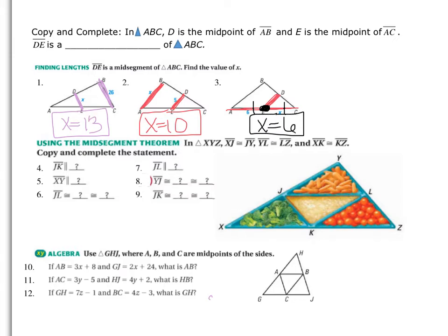Think about things making sense: if X is on the smaller piece (the mid-segment), cut in half. If X is on the larger piece on the outside (the third side), double it. If X is along the side of the triangle at a midpoint, it stays the same.